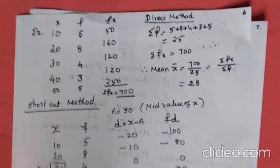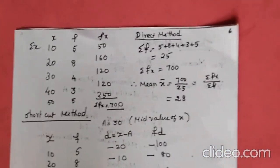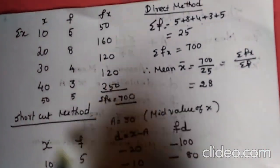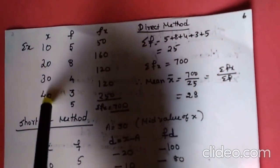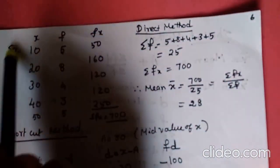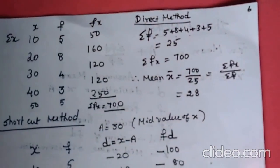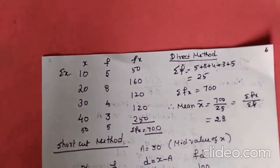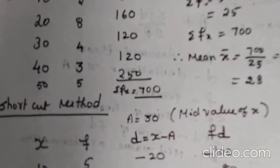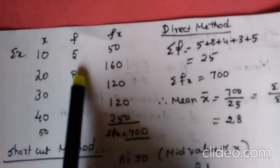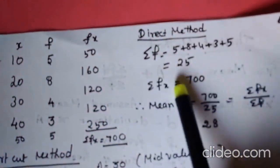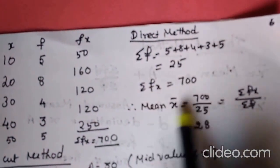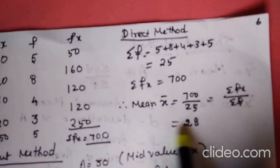Now I am going to take an example and solve it using all three methods — direct, shortcut, and step deviation. The x values are 10, 20, 30, 40, 50 with frequencies 5, 8, 4, 3, 5. Direct method formula: sigma fx / sigma f. Adding frequencies gives sigma f = 25. Adding fx gives sigma fx = 700. Mean = 700/25 = 28.